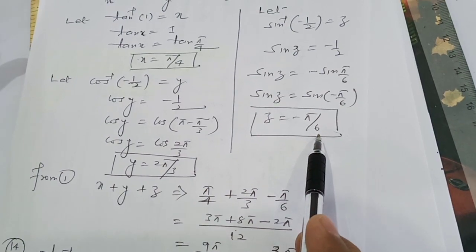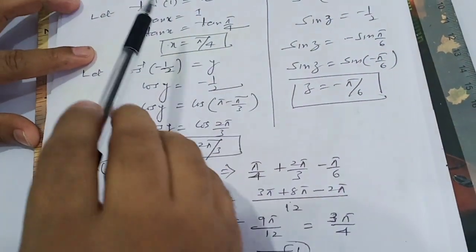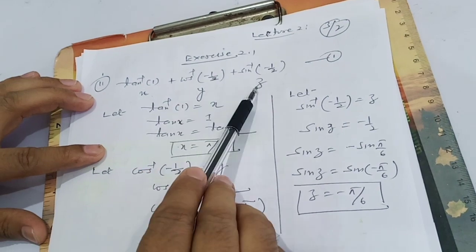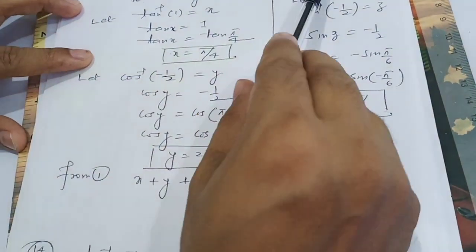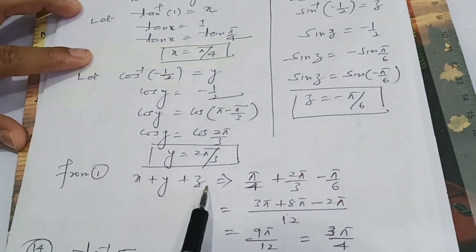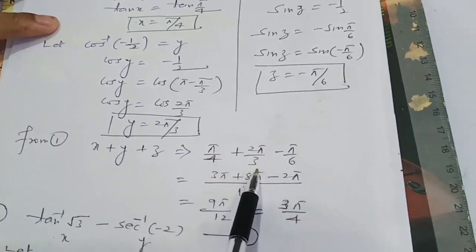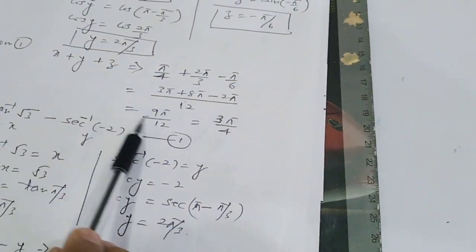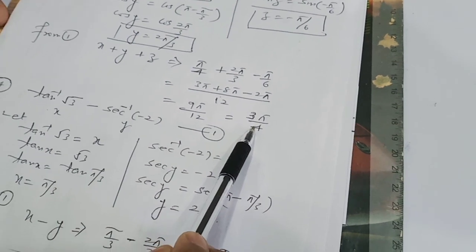Now from the first equation, x + y + z = π/4 + 2π/3, which simplifies to 3π/4. So the answer to question 11 is 3π/4.